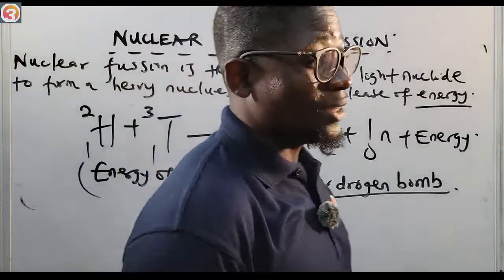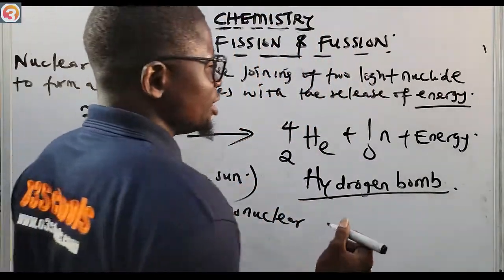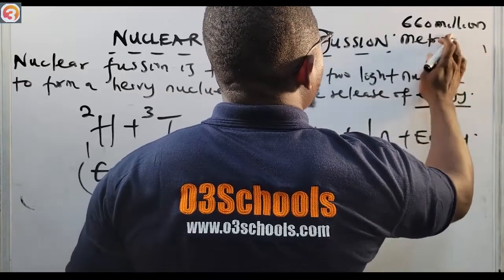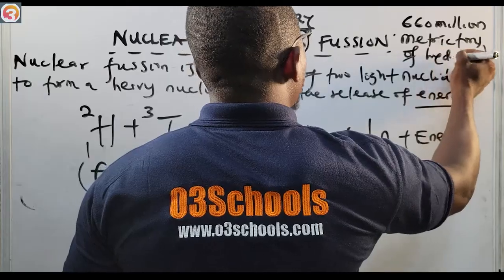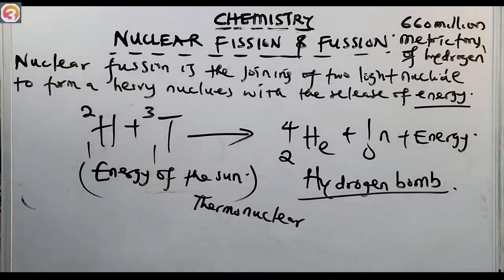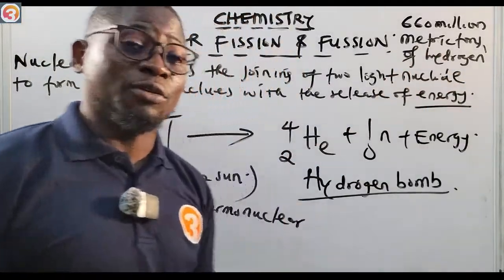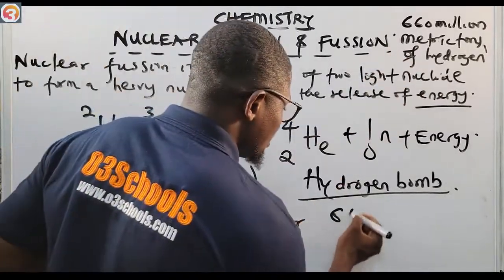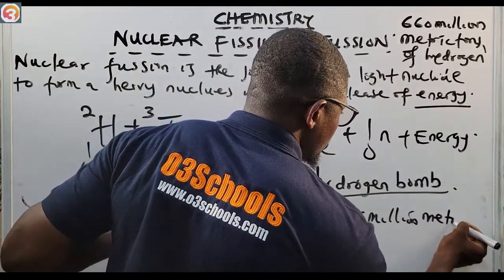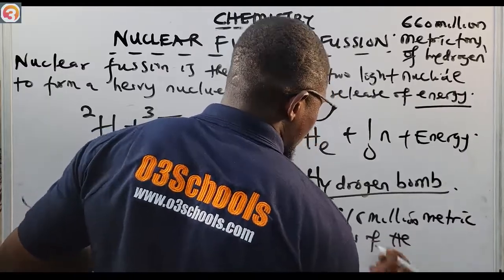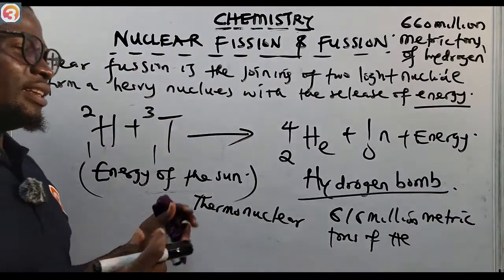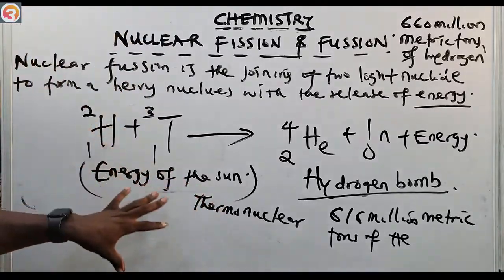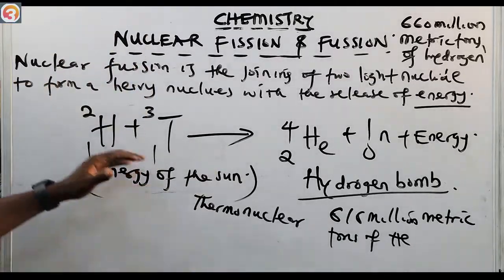So as a take-home, the energy of the sun is generated by thermonuclear fusion of hydrogen isotopes to form helium nucleus. The sun generates 660 million metric tons of hydrogen per second and produces 616 million metric tons of helium nucleus per second — that is how the sun generates its energy through nuclear fusion.